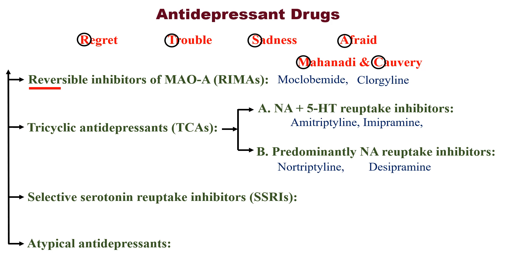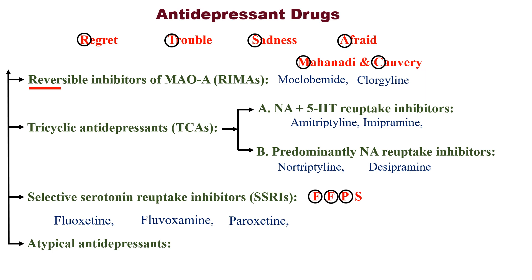The third category of antidepressant drugs is selective serotonin reuptake inhibitors. Remember the mnemonic FFPS: F for fluoxetine, again F for fluvoxamine, P for paroxetine, and S for sertraline.